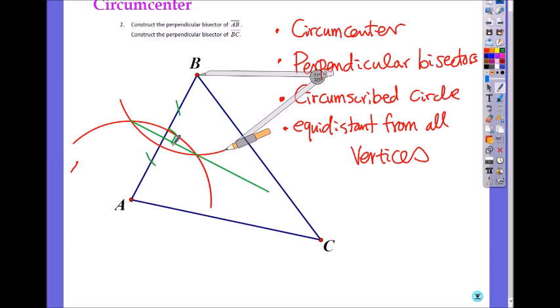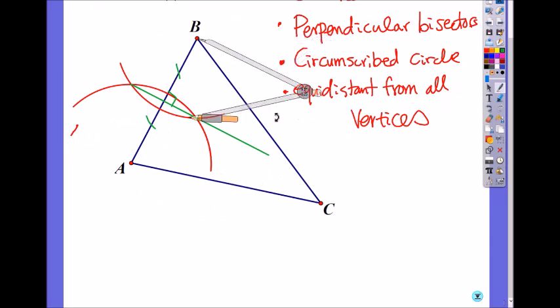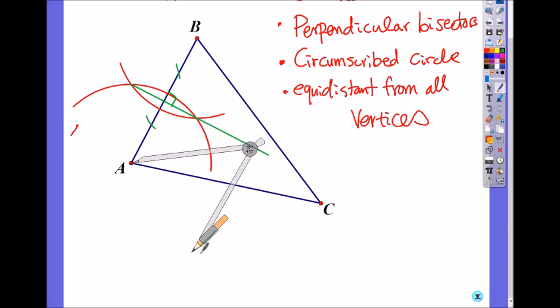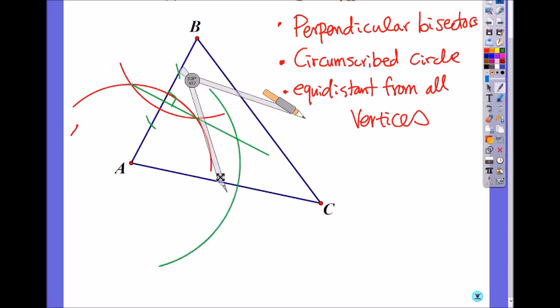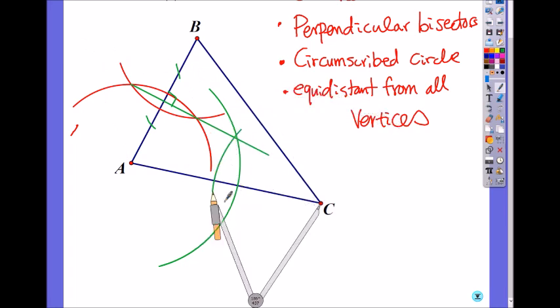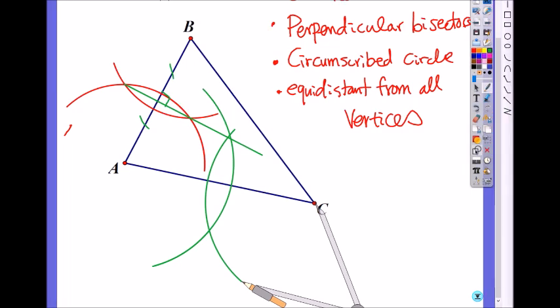You have to do the same thing on the other two sides. So now, if you want to, and if it's more than half A, you can keep the same width, but it looks like it's almost half, so make it wider. And you keep the same width and draw the arc from the other side. So now, my perpendicular bisector is from here to there.